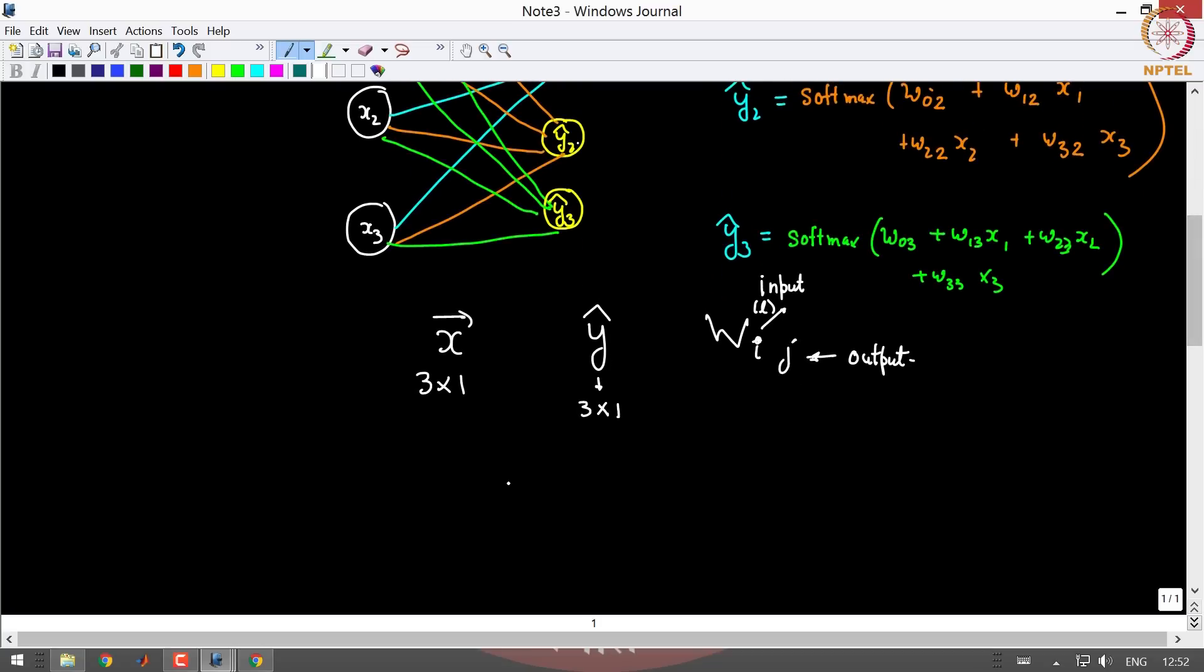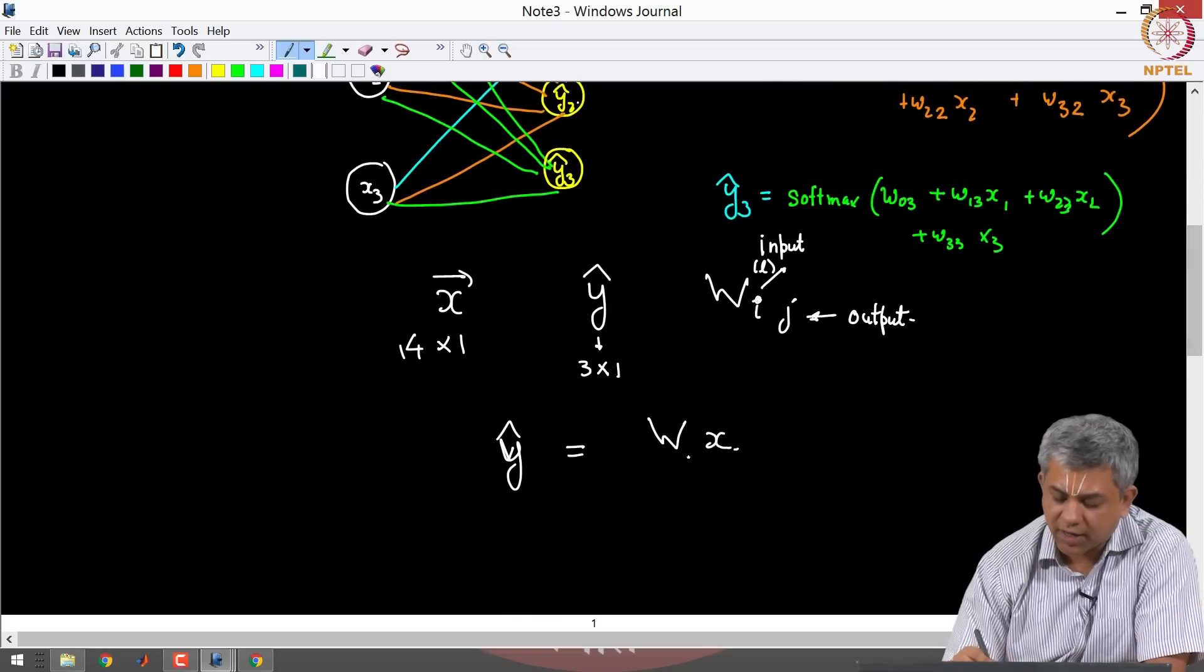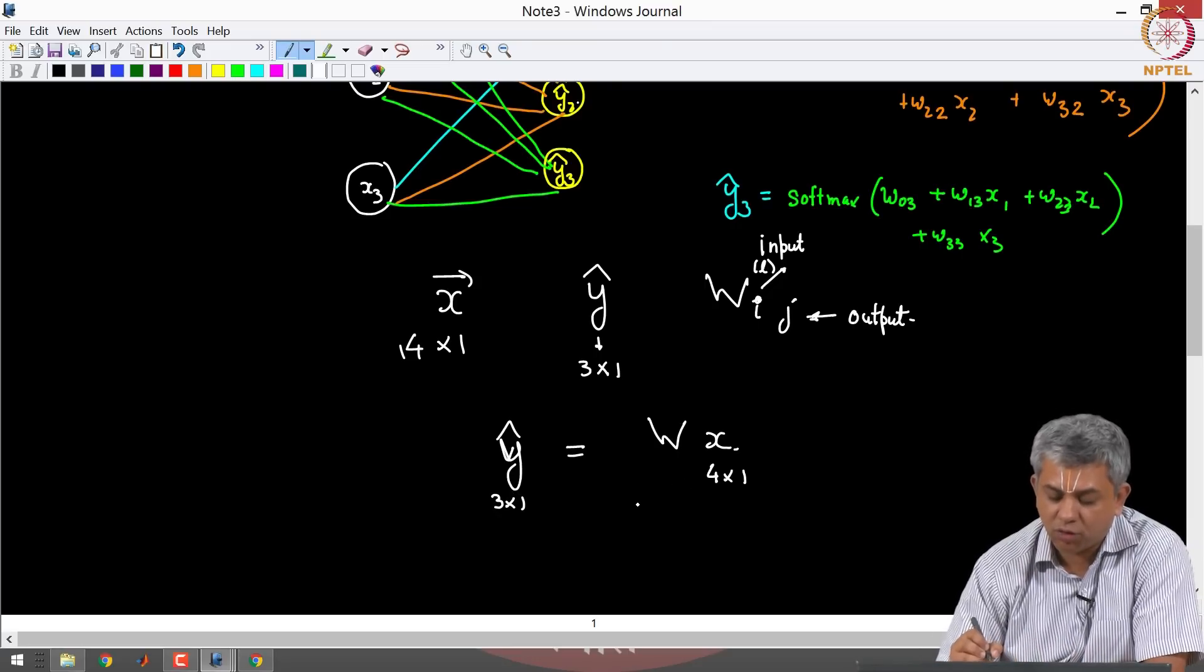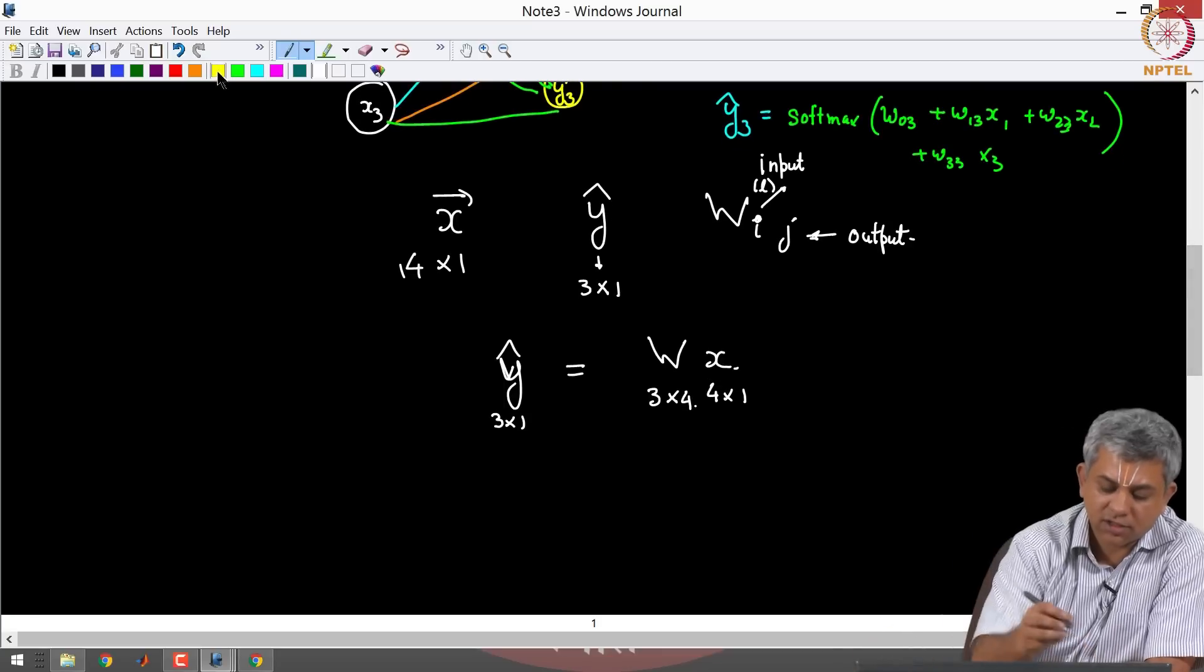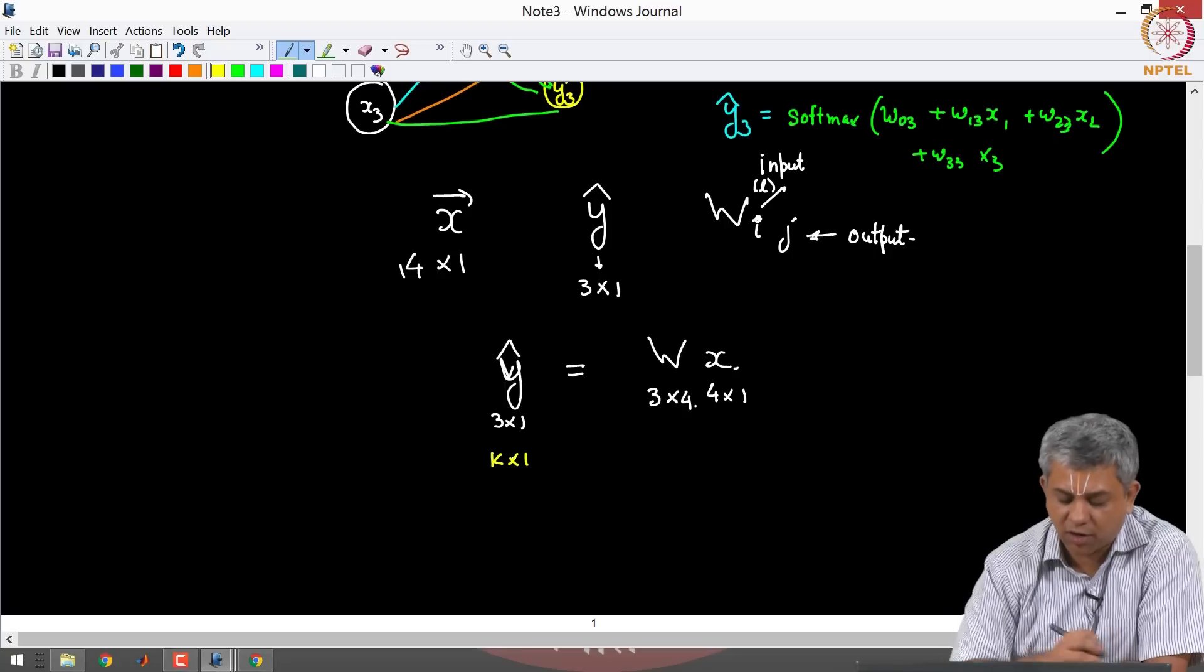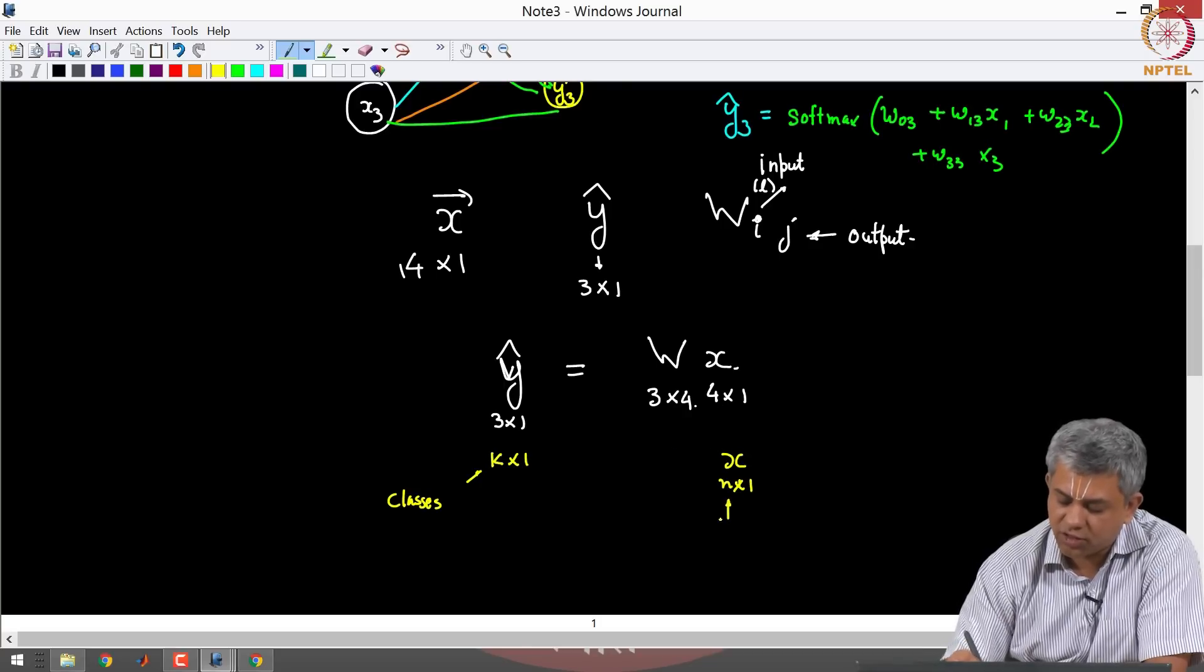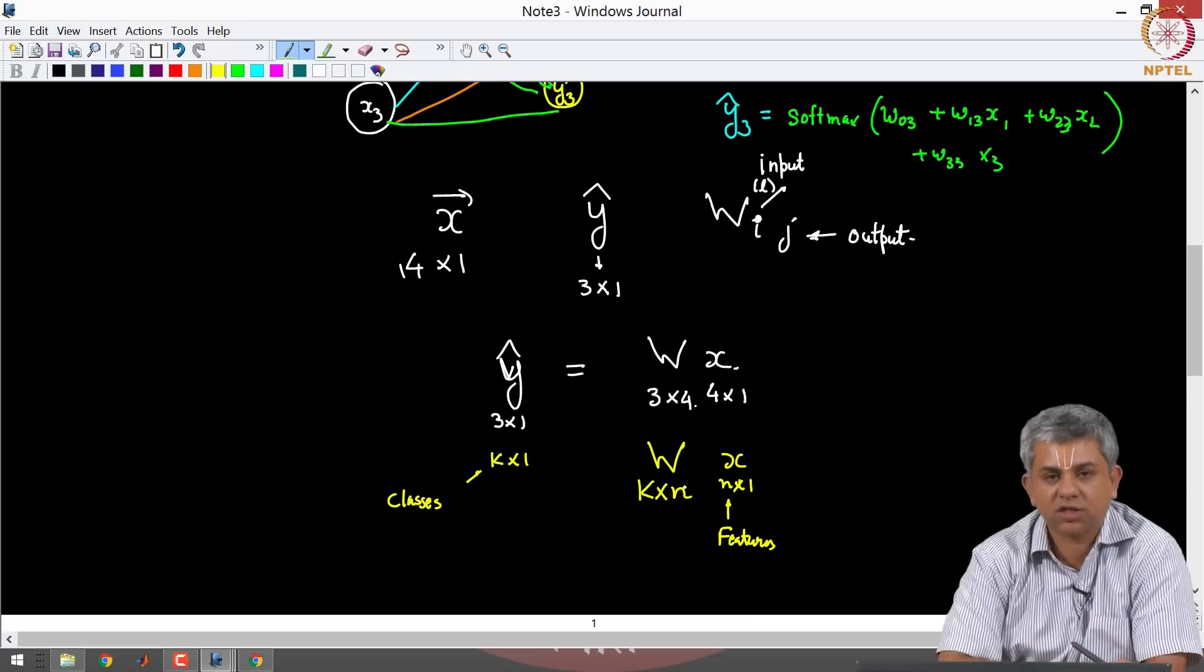Coming back to this, if we want to write Y hat as W times X, just for this case I will make X as four cross one so that the four includes our bias unit also. So you can write Y hat as WX. X will be four cross one, Y will be three cross one. So if you want an appropriate W, please imagine what W should be. This should be three cross four. In the general case, if Y hat is K cross one, where K is the number of classes, and X is N cross one, where N is the number of features, then W should have the size K cross N.